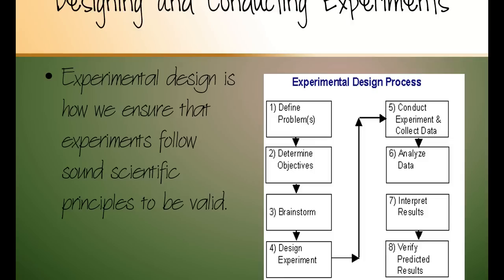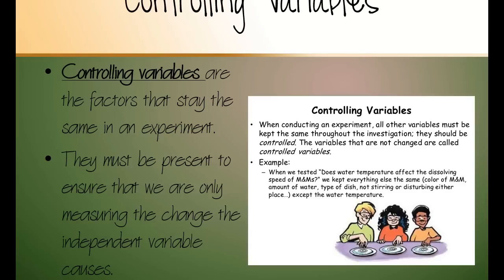Alright, designing and conducting experiments. We want to make sure that we're really thorough, and so we follow something called experimental design. Experimental design makes sure that we follow a step-by-step process. We define our problem. What is our question? What do we want to find out? We're going to write our hypothesis in here. We're going to determine what's important to us. What are we looking for? We're going to design the experiment, conduct the experiment, collect all the data. Then we have to analyze that data. We have to interpret it or come to some conclusions, and then we need to verify it. So experimental design pretty much means designing an experiment.